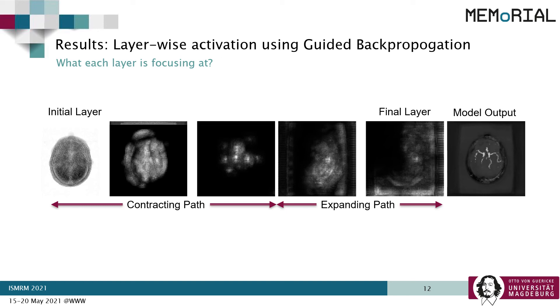It can be observed that the network initially focused outside the brain. The second layer then focused on the whole brain, followed by the third layer which focused mostly on the brainstem region. The focus of the fourth and fifth layers was somehow distributed all over the image.